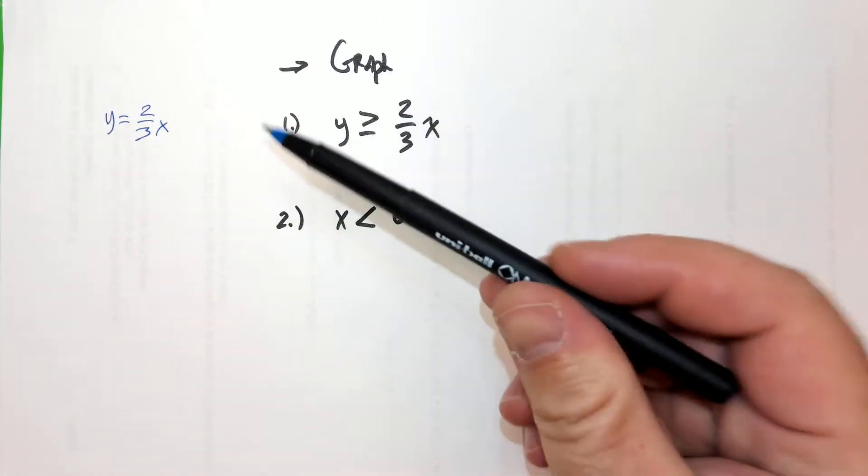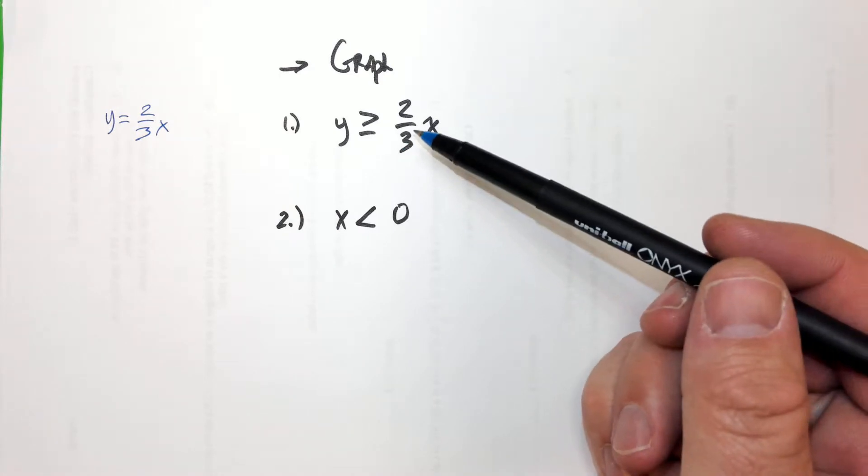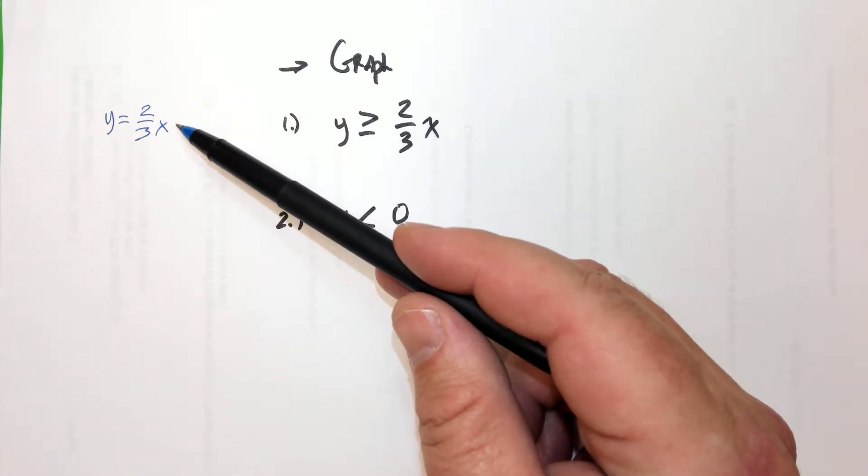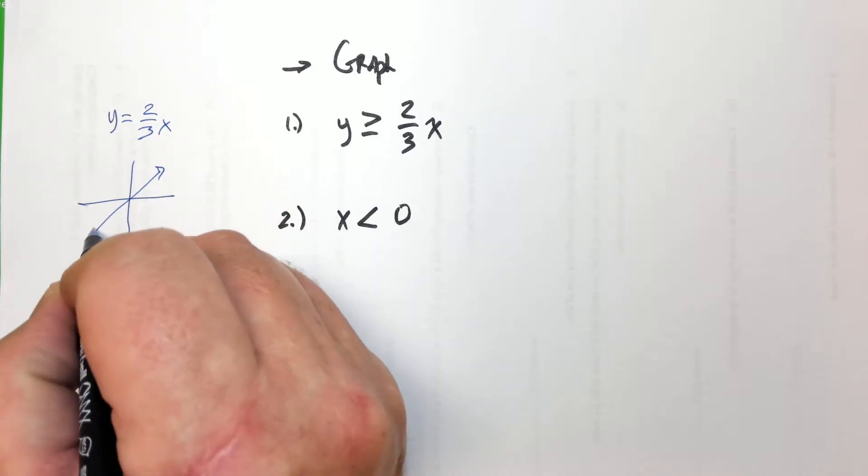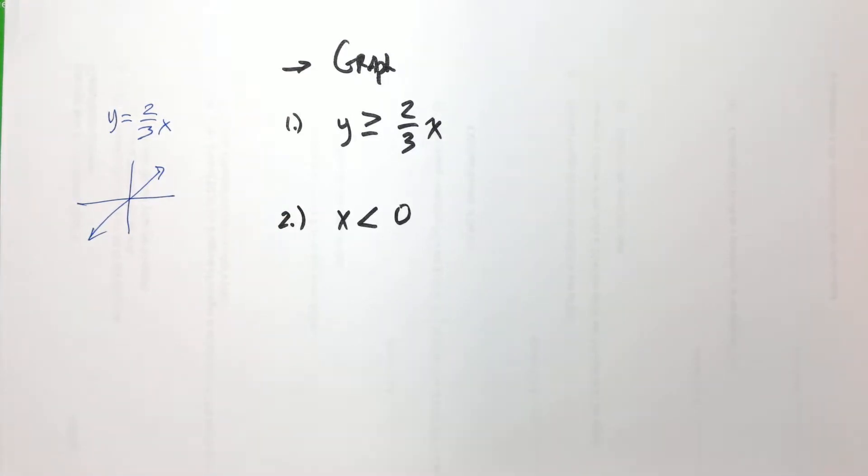If it said y equals two thirds x instead of this, we wouldn't shade this at all, you're right. This would just be a line, like something like that. So Edgar, why do we shade?